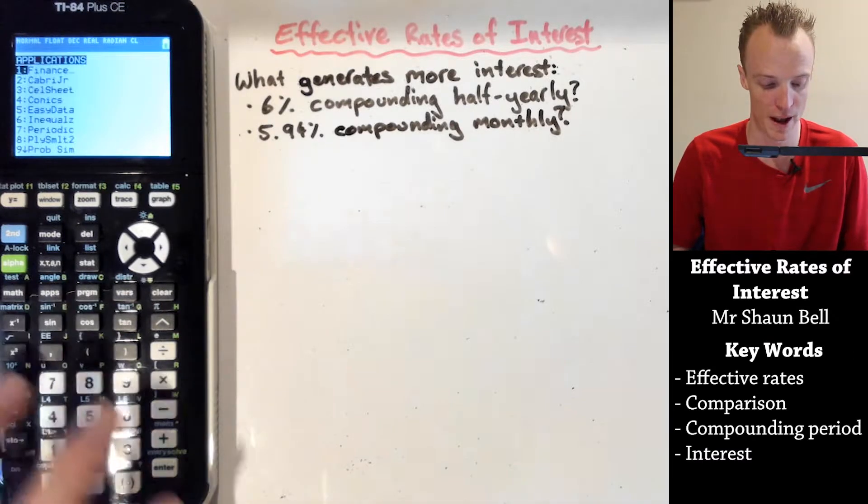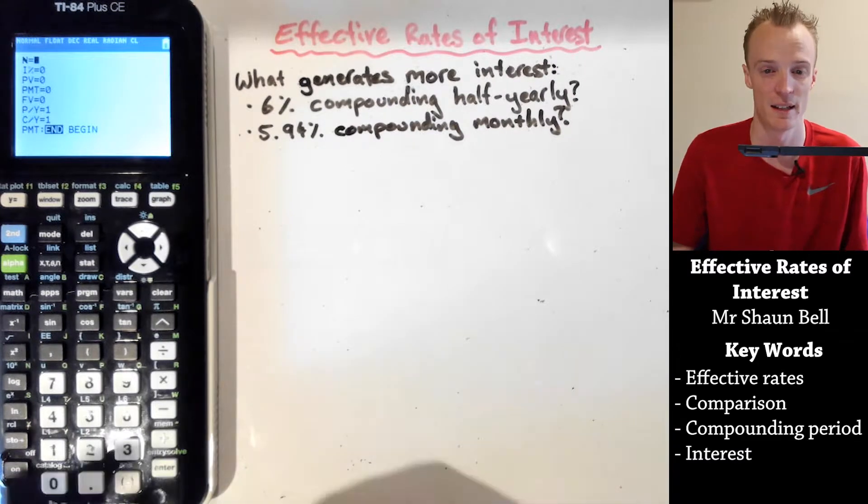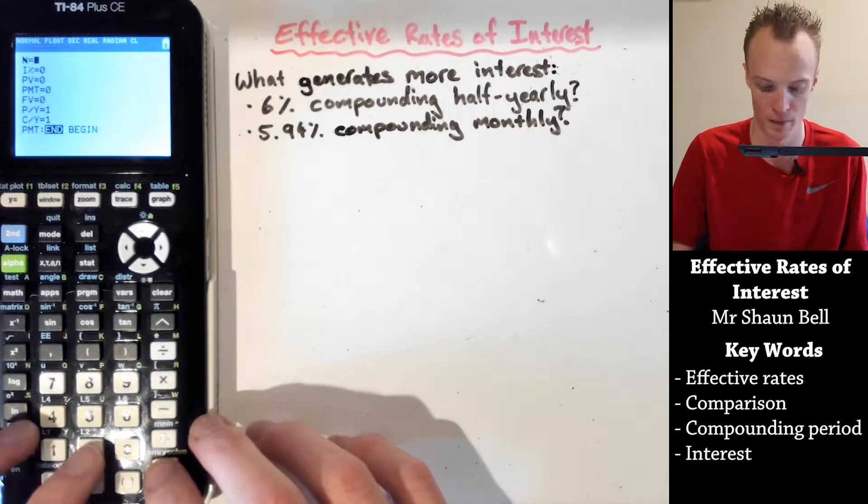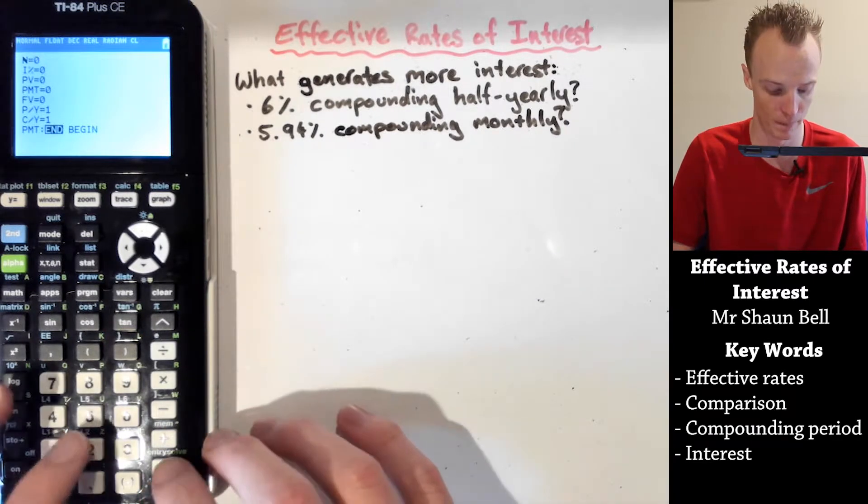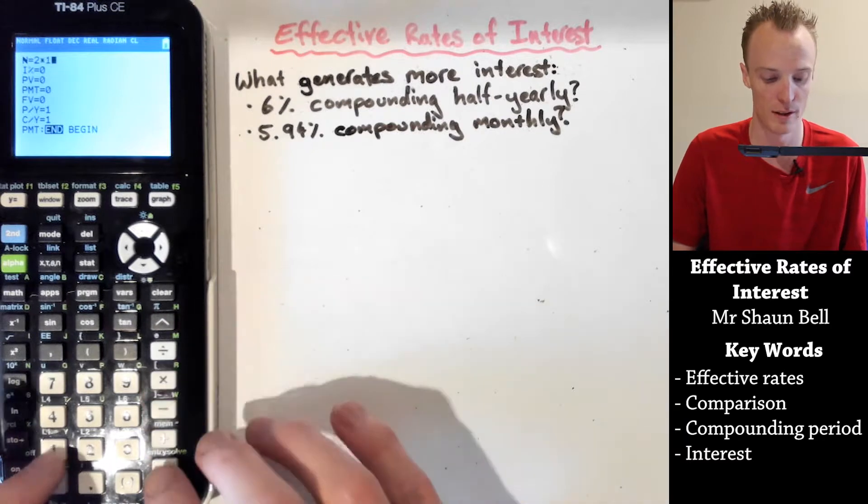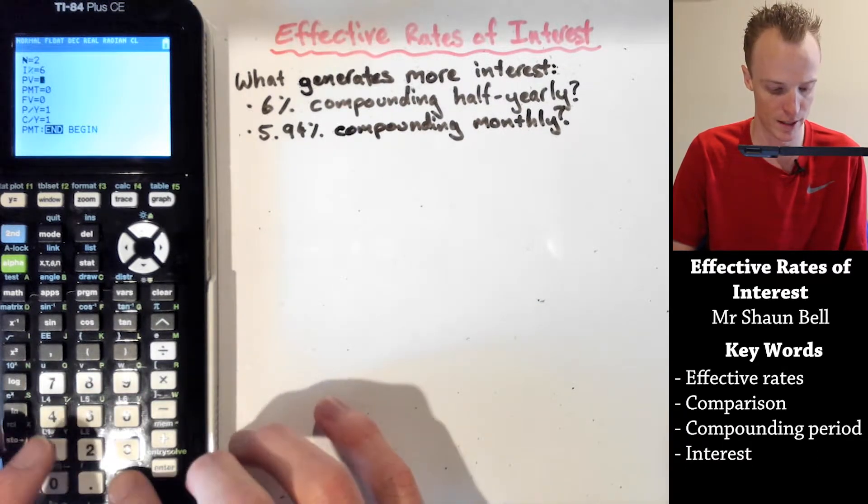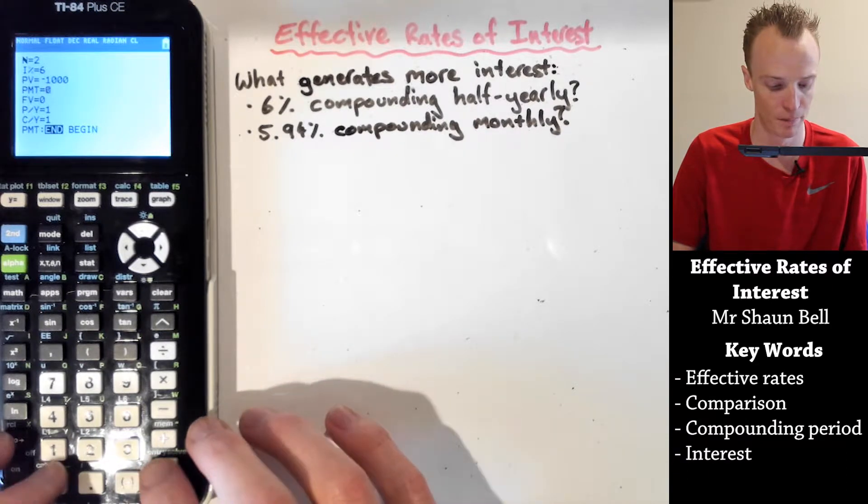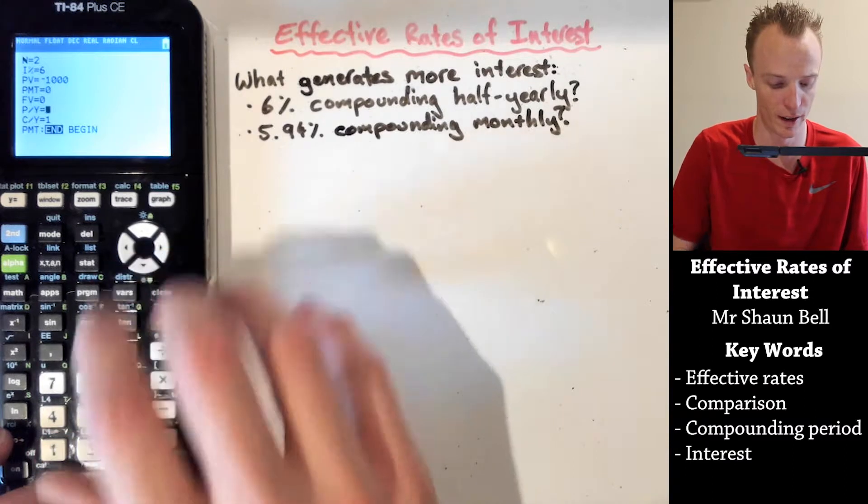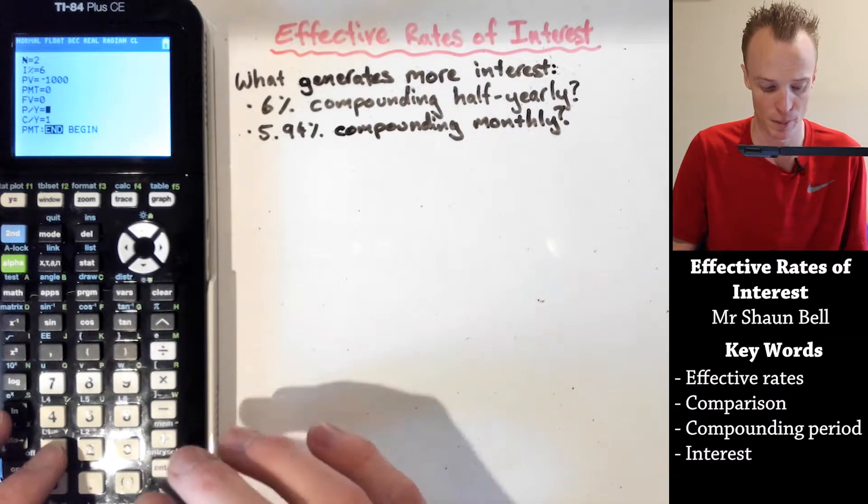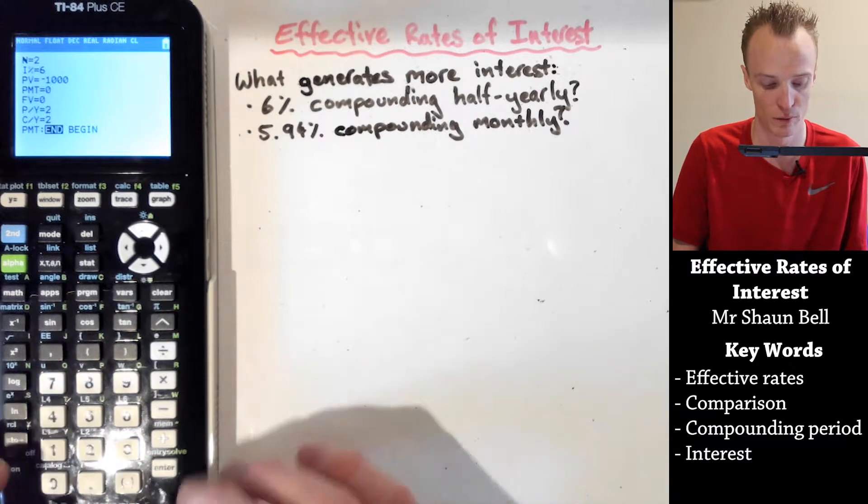I'd quickly go into my apps and my finance TVM solver and let's enter these amounts. If I was investing at 6% for one year compounding half-yearly, one year would be 2 times 1. The percent would be 6% and I'm investing $1,000. The payments per term we're going to leave, the future value we're going to leave, and the payments per year and compounding per year will be 2 for this example.